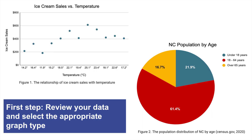Depending on the nature of your data, you will use different chart types to create effective visualizations. Common types include bar graphs, line graphs, pie charts, and scatter plots. Before you begin, carefully consider which graph type is a good fit for your data. For a review of different graph types and their uses, we have linked some excellent resources in the description box below.